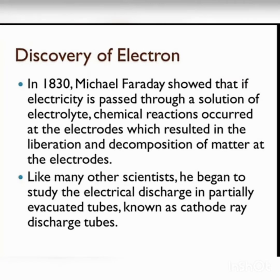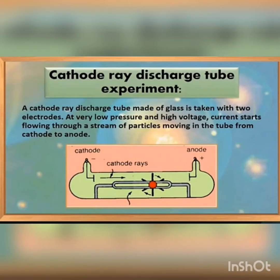In 1830, Michael Faraday showed that if electricity is passed through a solution of electrolyte, a chemical reaction occurs at the electrodes. A cathode ray discharge tube made of glass is taken with two electrodes. At very low pressure and high voltage, current starts flowing through a stream of particles moving in the tube from cathode to anode. In this way, electrons were discovered by J.J. Thomson.